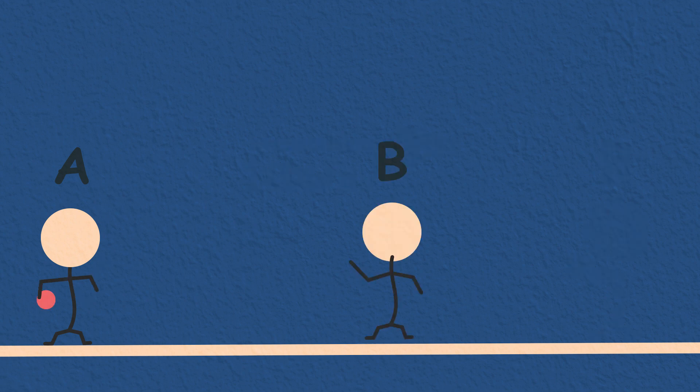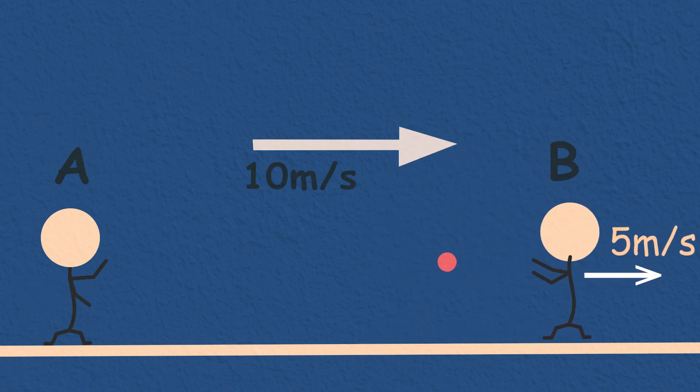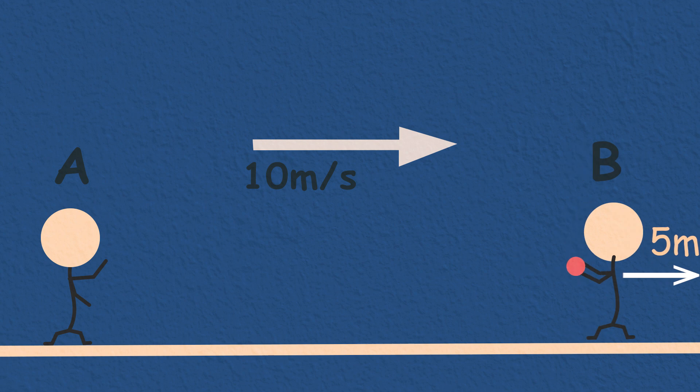Now let's say this time B is moving away from A at 5 meters per second, when A throws the ball at B at 10 meters per second. So B would see the ball coming at him at 10 minus 5, 5 meters per second.